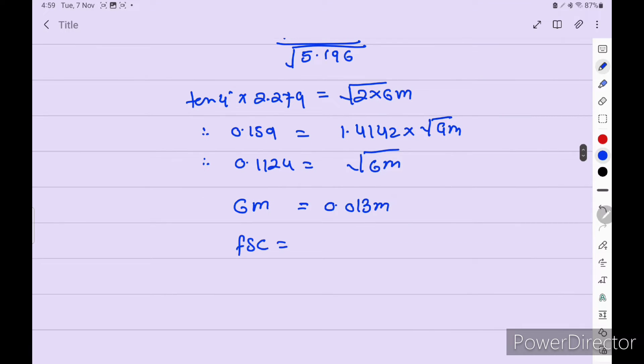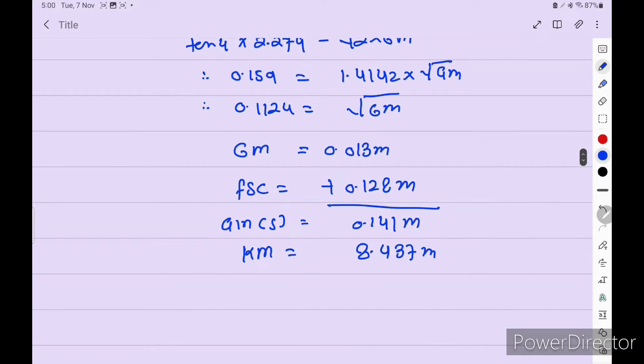So I just take out 2 from the square root. So we get 0.1124 is equal to GM. This will divide the other side. So GM is equal to 0.013 meter. Okay. FSC plus 0.128 meter. So GM solid we get 0.141 meter. GM we calculate from the MV Handship particulars, 8.437 meter.